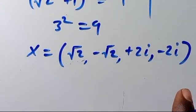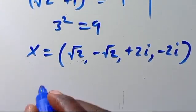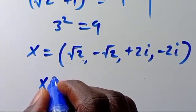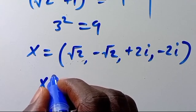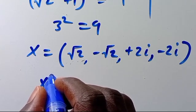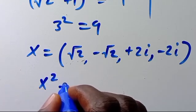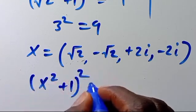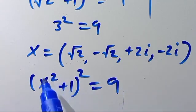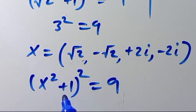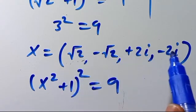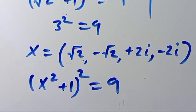So we declare finally that x equals positive root 2, negative root 2, positive 2i, and negative 2i — four solutions in total. This is because the expansion of (x² + 1)² equals 9 gives us x to the power of 4, which yields four possible solutions.